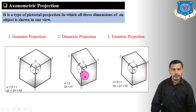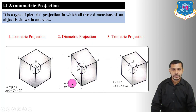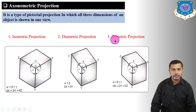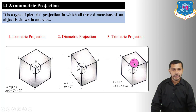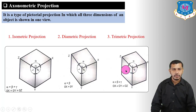In diametric planes, two planes are equally inclined to each other than the third plane — that means alpha equals beta, but lambda does not equal alpha or beta. Whereas in trimetric projections, the trimetric planes are not equally inclined to each other; all three planes are inclined at different angles, meaning alpha does not equal beta does not equal lambda.